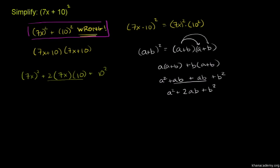Simplifying: 7x squared is 7 times 7, which is 49, times x squared. Then the product: 2 times 7 times 10 equals 14 times 10, which equals 140x. Plus 100.